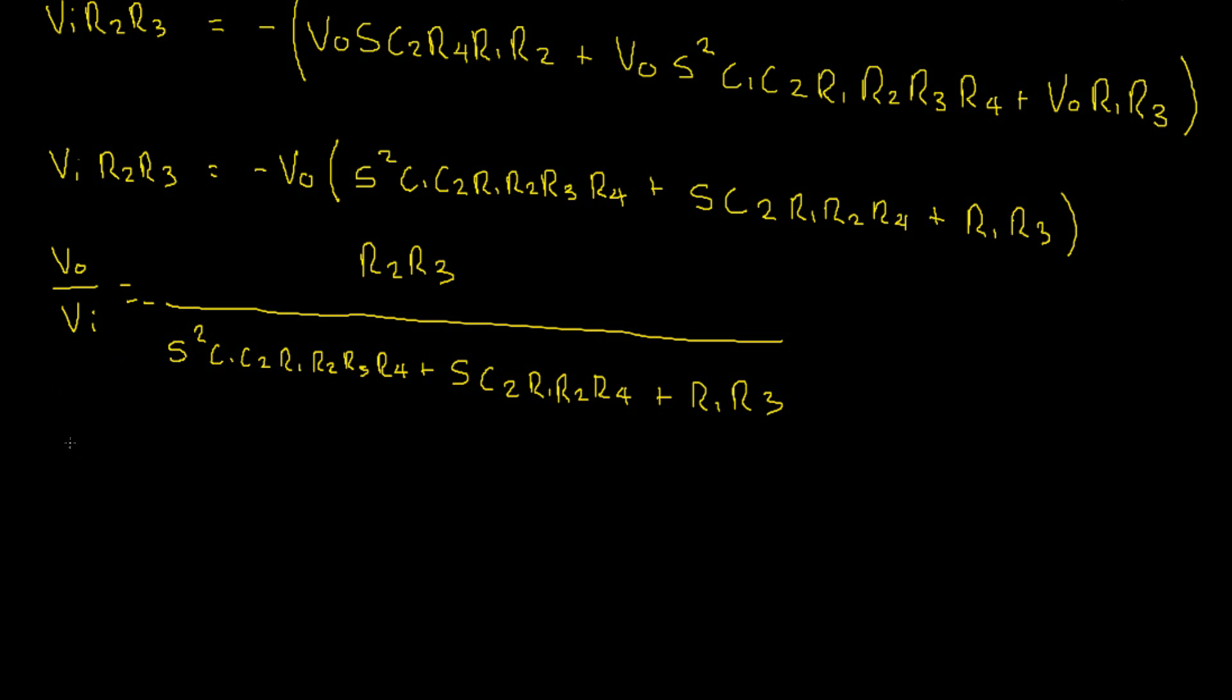This will give us VO divided by VI, that's unchanged, equals, dividing through by C1 C2 R1 through R4, gives us 1 on. Remember, the R2 and R3 would cancel. And then you'd simply be left with C1 C2 R1 R4 divided by C1 C2 R1 R4.